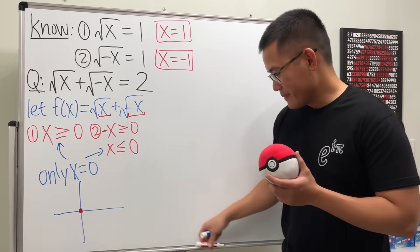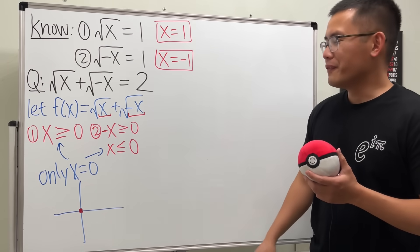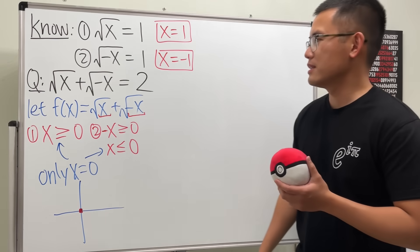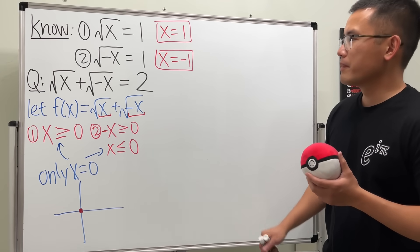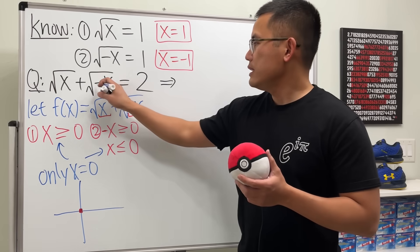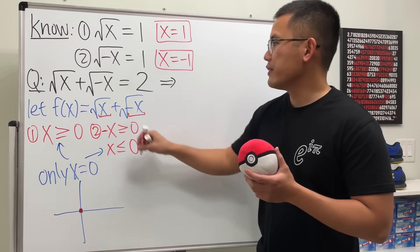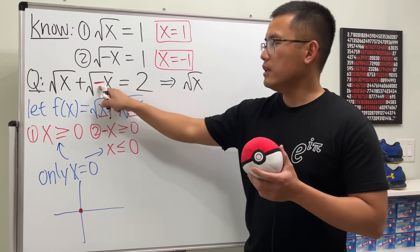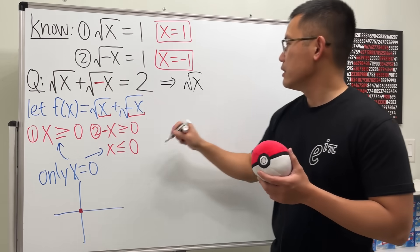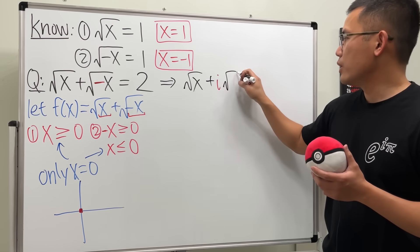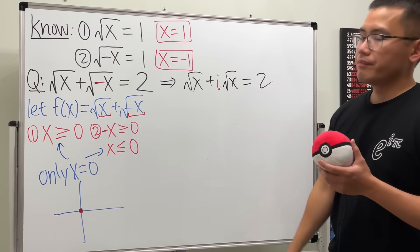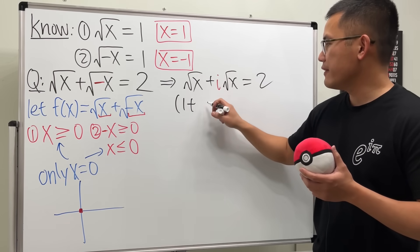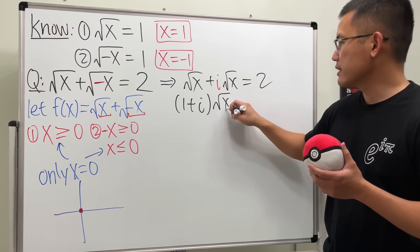Now let's talk about complex solutions. We have √(-x) in the equation, so I'm going to rewrite that by pulling out an i, giving us √x + i·√x = 2. Now let's factor out √x and write: (1 + i)·√x = 2.